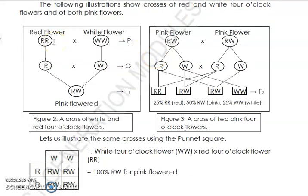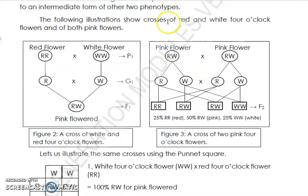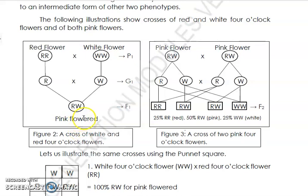Let's have an example for incomplete dominance using the four o'clock flower. For this flower, you have red, white, and pink colors. For the red flower, the genotype is represented as capital R capital R (RR). For the white flower, it is WW. When you combine R and W, you get RW — and when you see genotype RW, the color is pink. Remember that.